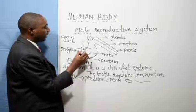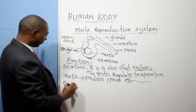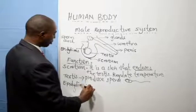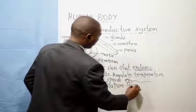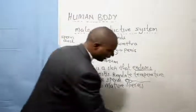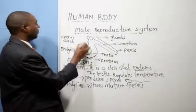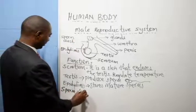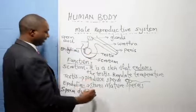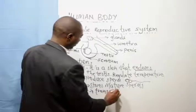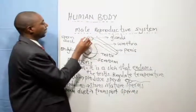Anytime sperm mature, they are stored in the epididymis, ready for discharge. The epididymis stores mature sperm. Then the sperm duct discharges or transports the sperm from the epididymis to the glands.